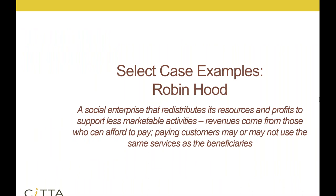Moving on to a tongue-in-cheek term for this model: Robin Hood. It basically means selling products or services to those who can afford to pay, often at market price, and then redirecting that funding to your clients or the individuals you're trying to assist. Sometimes the paying customers are using the same services as the beneficiaries; sometimes they're not. Perhaps you open a high-end boutique clothing store, sell to those who can pay, and use that funding for a homeless shelter or other services.